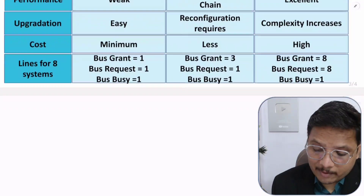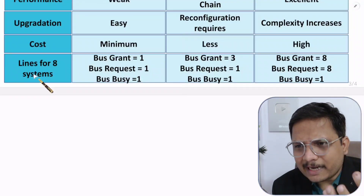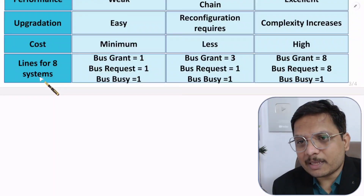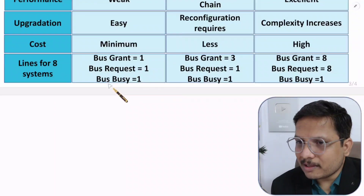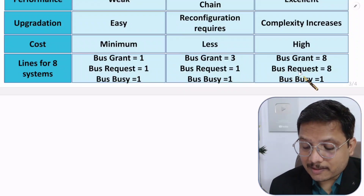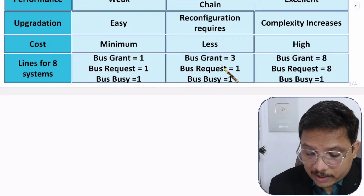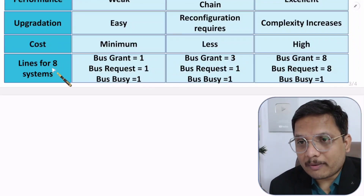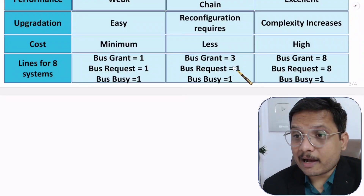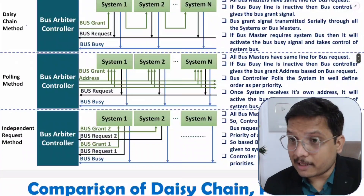Here is an example: for 8 systems, how many bus grant, bus request, and bus busy lines are needed? The bus busy line is one for all methods. Bus request line is one for daisy chain and one for polling, but 8 separate lines for independent request. For bus grant: in daisy chain it is one line; in independent request it is 8 lines; in polling it is 3 lines, because 2 to the power 3 equals 8, so 3 address lines are sufficient to address all 8 systems. I hope you have understood all those things. If you have anything to share, please note it in the comments — I will be happy to help. Thank you so much for watching this video.